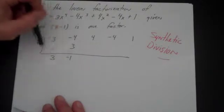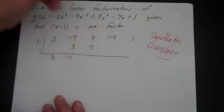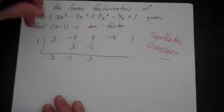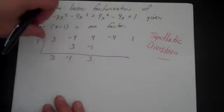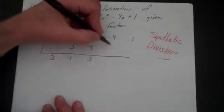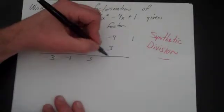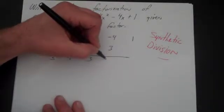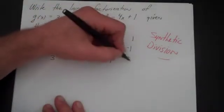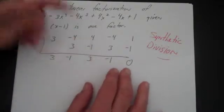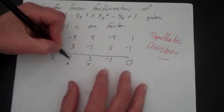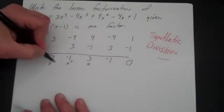Then I'm going to multiply again. Add 4 and minus 1, that's going to be 3. Multiply one last time — 1 times 3 is 3. Minus 4 and 3 is minus 1. 1 times minus 1 is minus 1, and then that's going to be 0. Now this is my remainder. This is my constant term, this is my x, my x squared, and my x cubed.